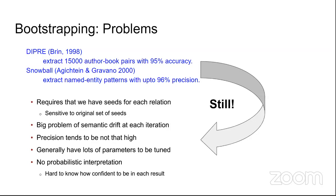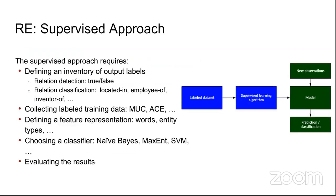Semantic drift occurs because you are only searching for the type of those seeds in the unstructured text to identify further search patterns, which limits scope. There is also a lot of hyper-parameter tuning required and no probabilistic interpretation. Hence we move on to supervised approaches.